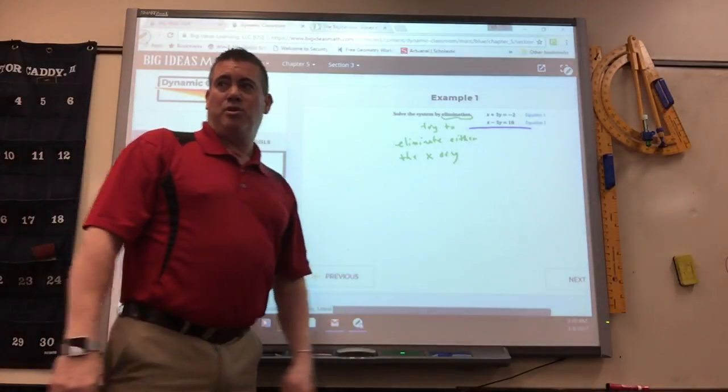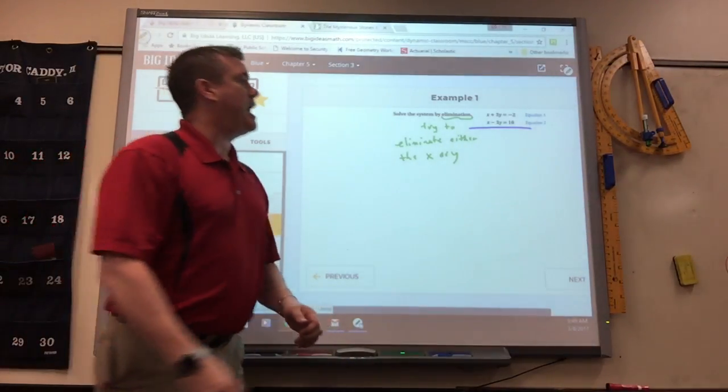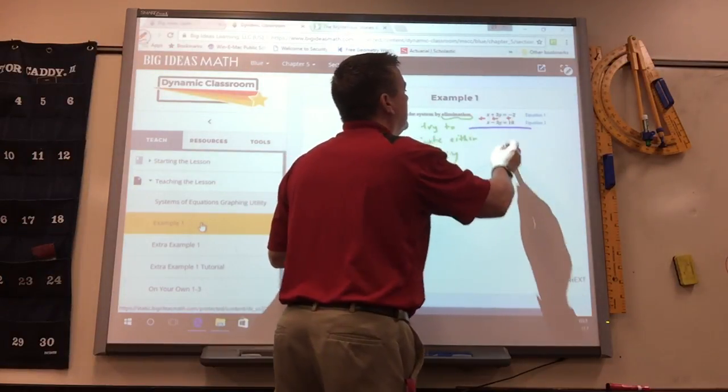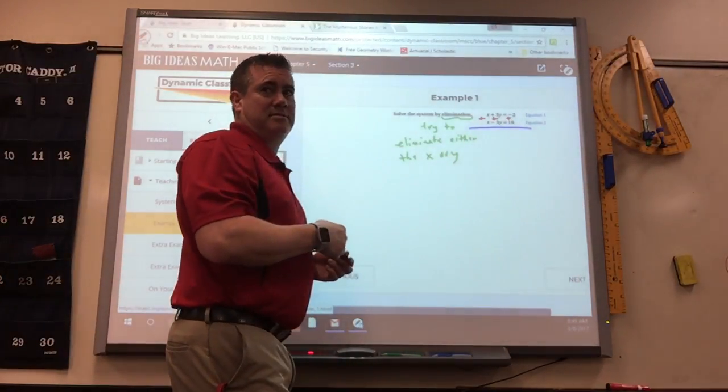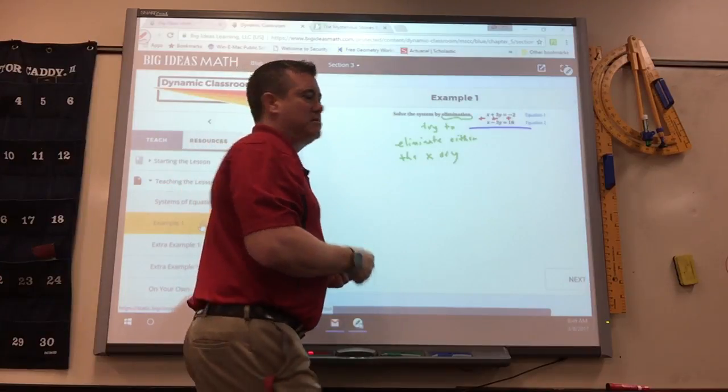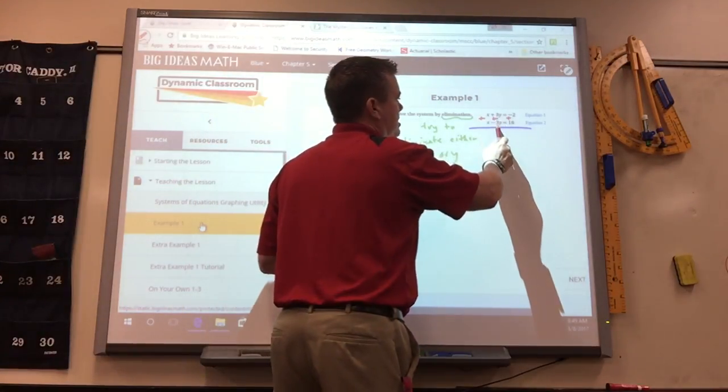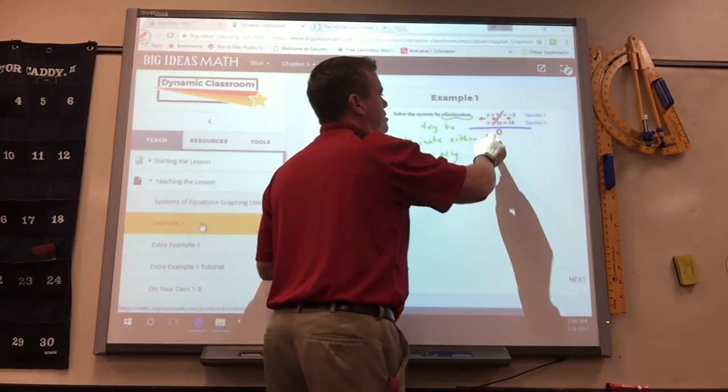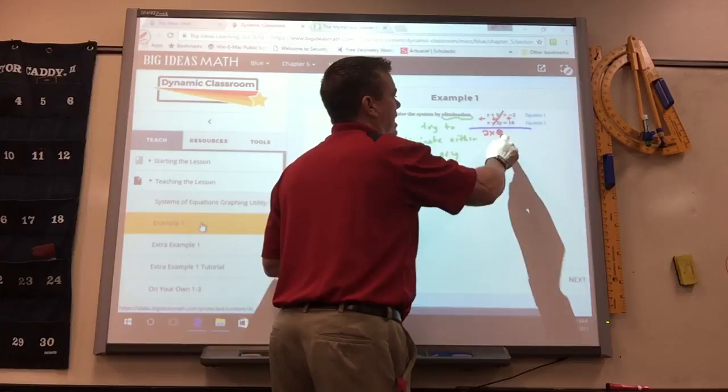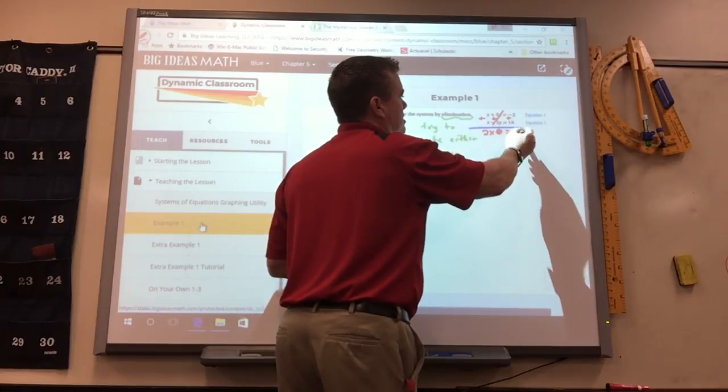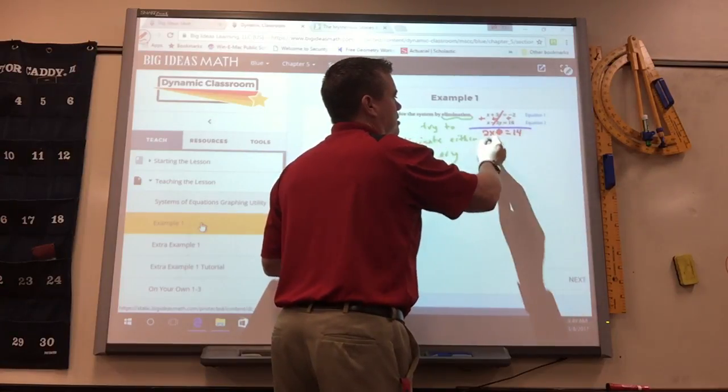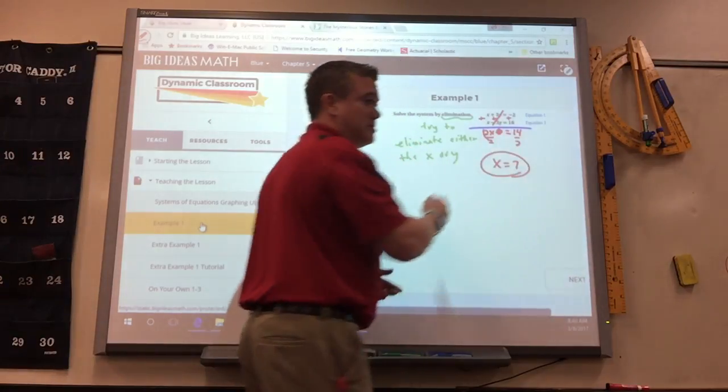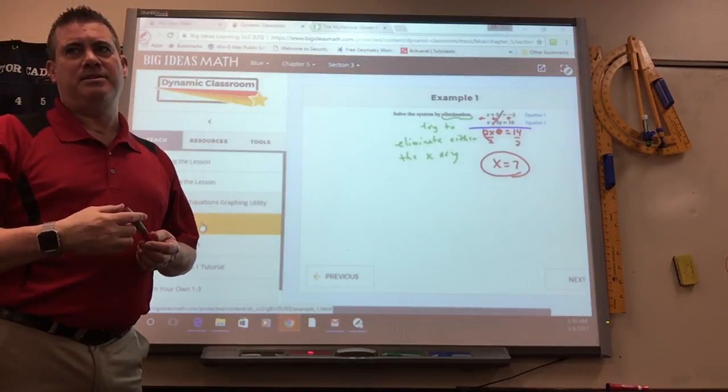Now this one, we have a choice. Remember, you can add or subtract. If I were to add these, the y's would be eliminated. Everyone see that? Because 3y plus negative 3y makes 0. x plus x is 2x. And that's nothing. Negative 2 plus 16 is 14. So then we just solve it, divide by 2, and there you have your x. So you see how easy that is?